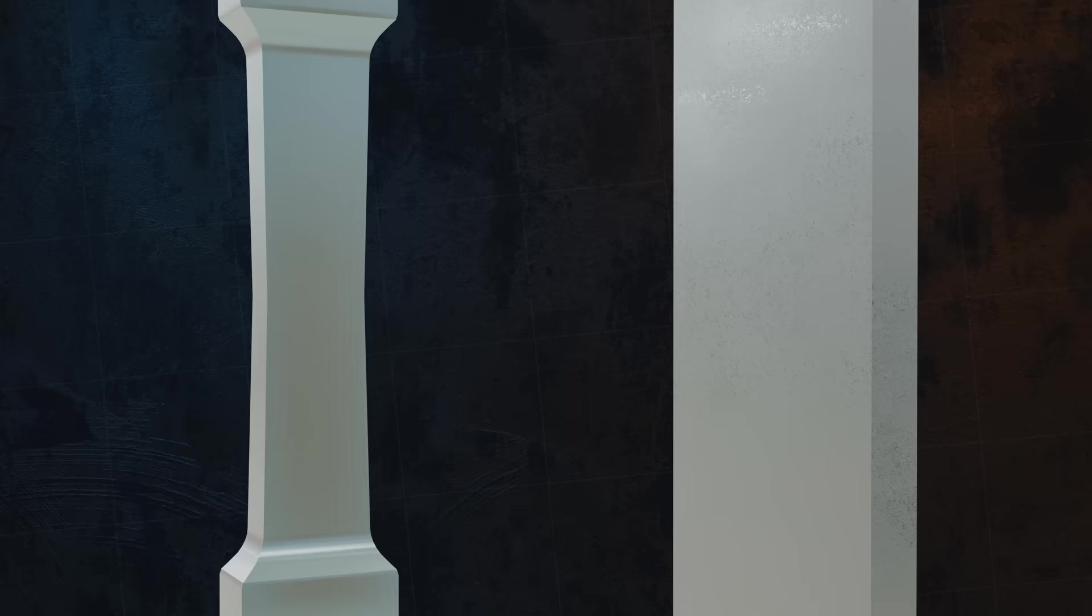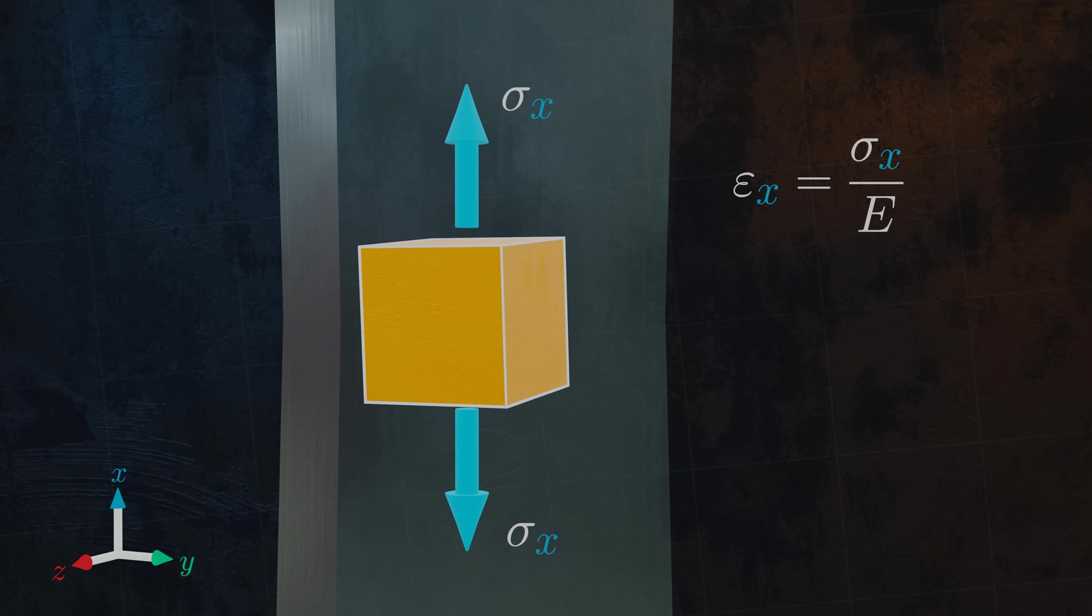It is easy enough to determine the strains acting on a small piece of the specimen under test. The applied stress is a normal stress in the x direction, sigma x. The strain in the longitudinal x direction is simply given by Hooke's law as sigma x divided by the Young's modulus E.